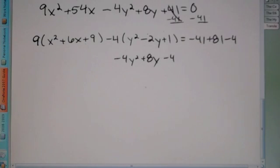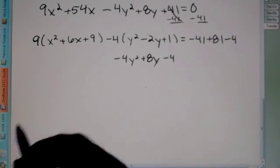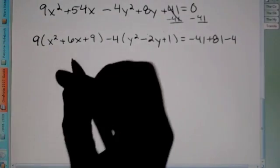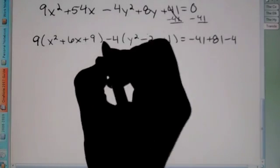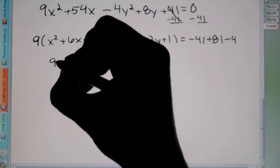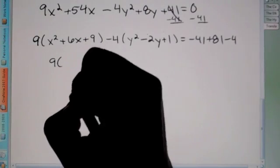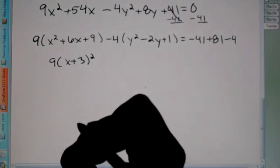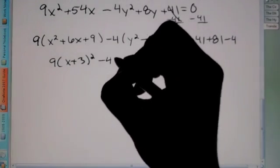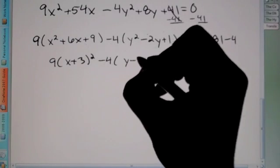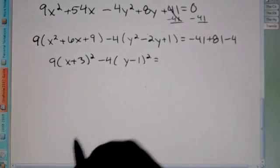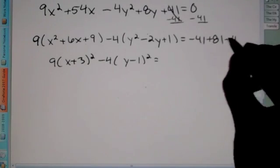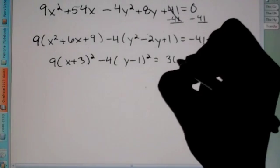Alright, let's do that with the y's now. So I'm going to take my negative 2, cut it in half. It gives me negative 1. I'm going to square it, which I get 1. So I'm going to add 1 here. But again, I didn't just add 1. In order to distribute that negative 4, I get negative 4y squared plus 8y, which I already had. Negative 4 times 1 is negative 4. So I added a negative 4, really, to this side of the equal sign. So I need to put a negative 4 here as well.